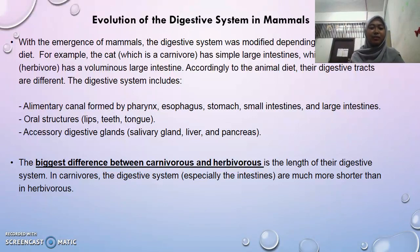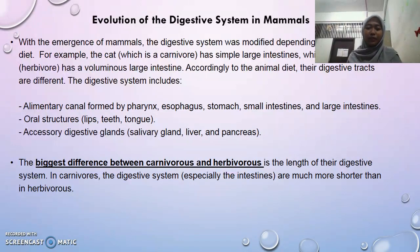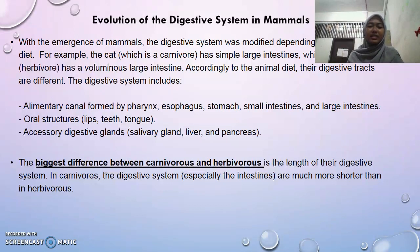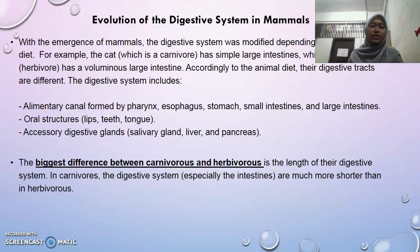If you read about the emergence of mammals, the digestive system is modified depending on the animal's diet. For example, the cat, which is a carnivore, has a simple large intestine, while the horse, a herbivore, has a voluminous large intestine. I am going to compare the herbivore and carnivore digestive systems, and according to the animal's diet, their digestive systems are different.